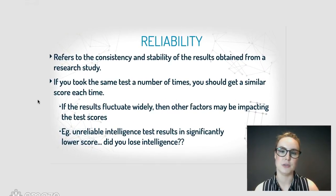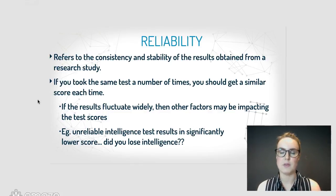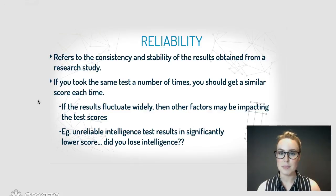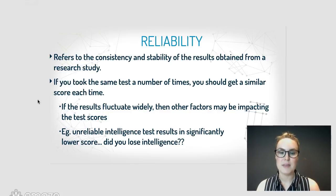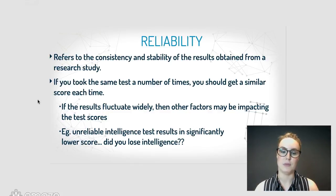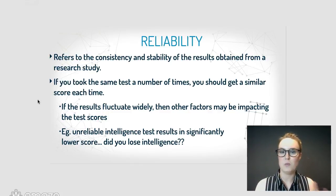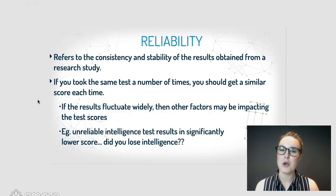For results to have high external validity, they need to be valid out in the real world. Now let's switch over to reliability. This refers to the consistency and stability of the results — basically, if you took the same test a number of different times, a reliable test should give you the same results each time. If the results fluctuate, other factors may be impacting the scores. For example, if an intelligence test gives you a significantly lower score each week, does that mean you're losing intelligence, or is the test just unreliable?